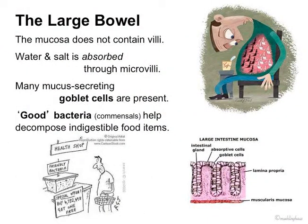The mucosa — the inside layer of the large intestine — does not have villi. What it does is absorb water and salt through microvilli. We also have many mucus-secreting goblet cells present there, because we also have a lot of commensals — good bacteria that help decompose indigested food items.